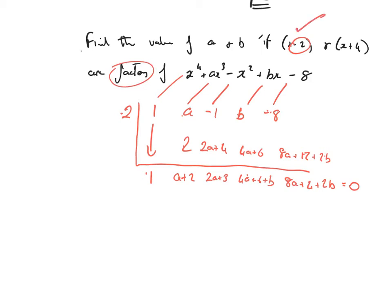Okay, so that's me taking care of that bit. Now, the question then says that x plus 4 will also generate a factor, so let's do that. So, x plus 4, what number goes up at the side this time? Minus 4. Okay, coefficients again: 1, a, minus 1, b, minus 8.